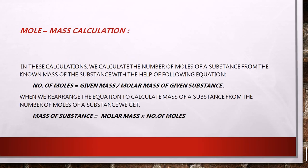Mole-mass calculation is used when mass is given and we need to determine the moles, or vice versa. If we have to determine the number of moles, we use: number of moles = given mass divided by molar mass. If we want to determine the mass of a substance, we use: mass = number of moles multiplied by molar mass, where molar mass is calculated from the atomic masses of each element.